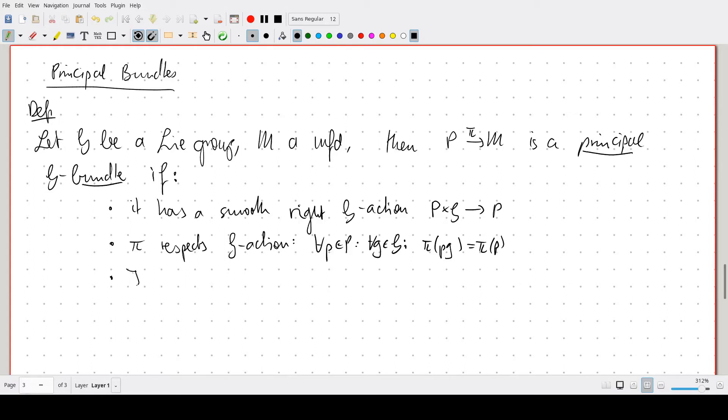And lastly, there is a cover Ui and maps phi i such that phi i are smooth maps from Pi inverse of Ui to Ui times G.